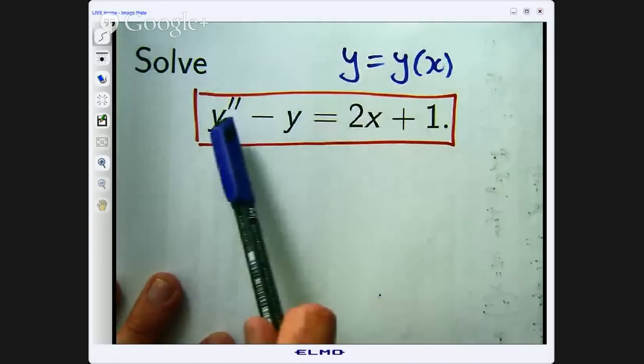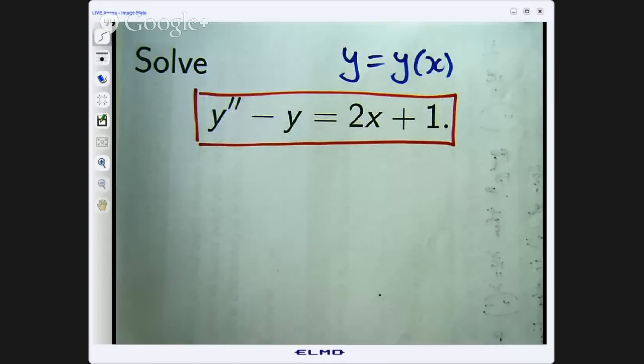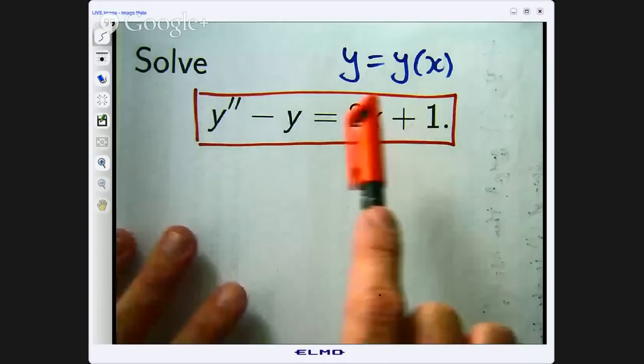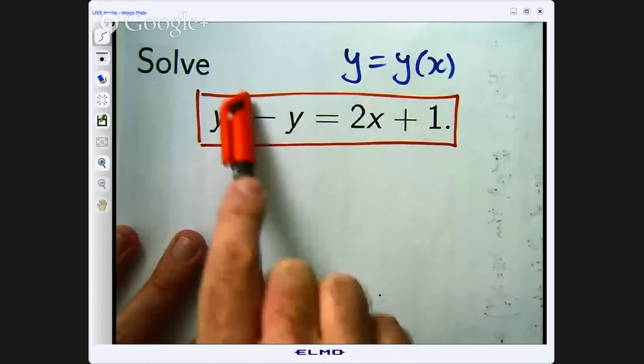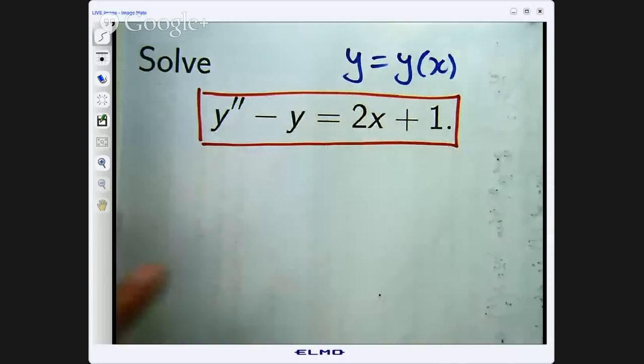It has an equal sign and it has the derivatives of some unknown function y. So we want to find the function y whose second derivative minus the function is left with 2x plus 1.